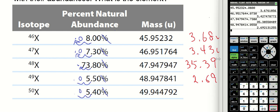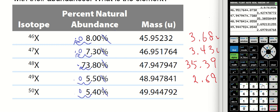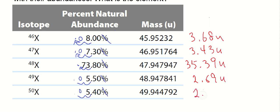All right, now our last one is isotope X-50, and that has a mass of 49.944792 times 0.0540. And that one's going to have three significant figures—it's 2.70. All right, nice and pretty.